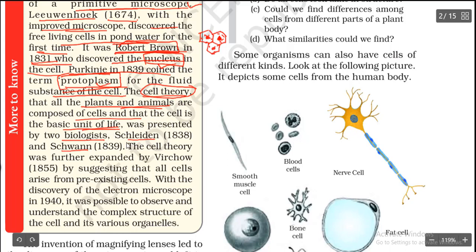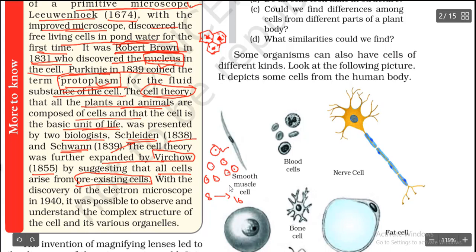The cell theory was further expanded by Virchow in 1855, who suggested that all cells arise from pre-existing cells. This means one cell divides to become two, two become four, four become eight, and so on — cells double each time. So a new cell always comes from a pre-existing cell.